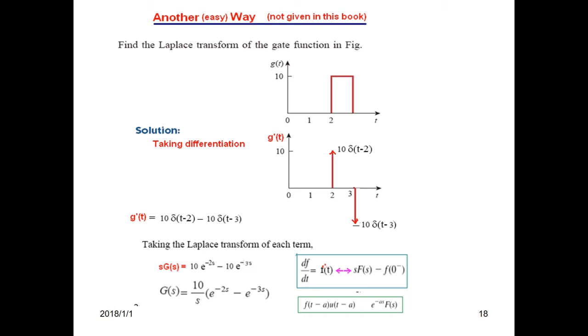Multiplying by 10, and if we bring s to the other side, G(s) will be as given here. So it is the same answer that we got in the previous example.